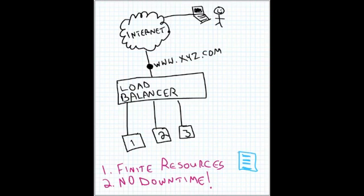A physical server has a finite number of resources. The second big issue is downtime — many companies don't allow any planned downtime, and when maintenance windows do exist, they're very short and at very odd hours of the night, to minimize any potential outages to customers.